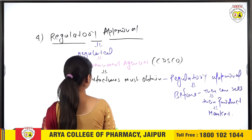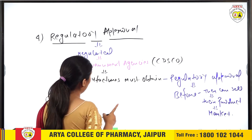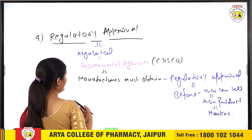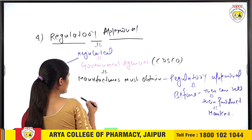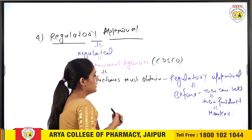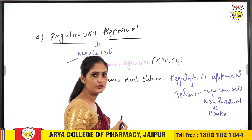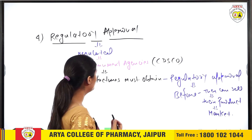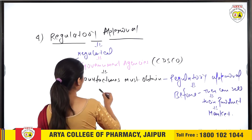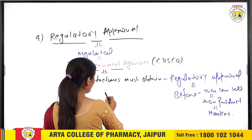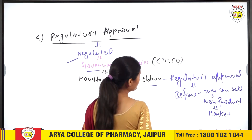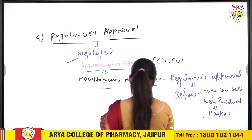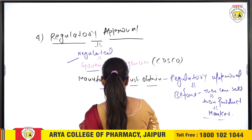Next is Regulatory Approval. Medical devices are regulated by a government agency called CDSCO — Central Drug Standard Control Organization — which has been established to regulate medical devices in a proper and uniform way. Manufacturers must obtain regulatory approval before they can sell their products to the market.